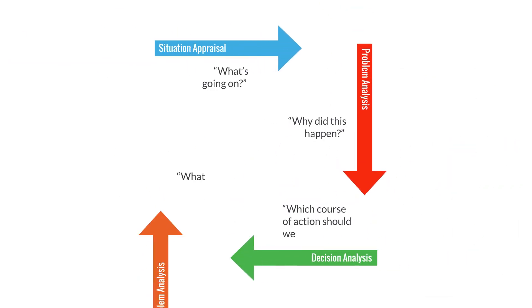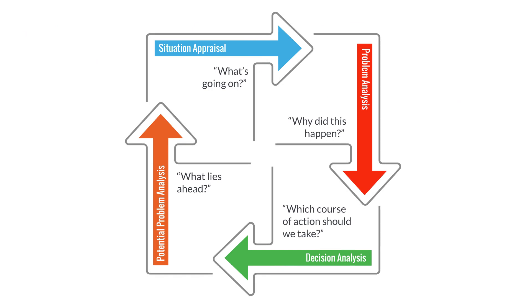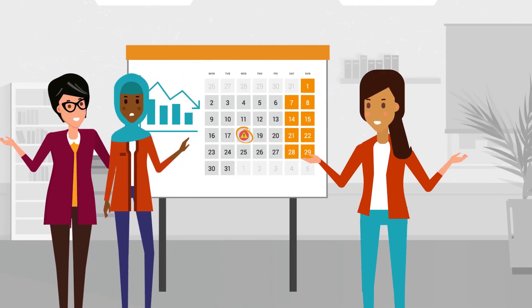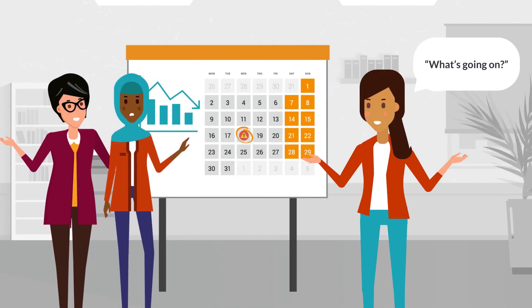Good critical thinkers reflect these patterns in the four types of questions they ask every day. To better understand a situation and move forward with confidence, they'll ask: what's going on?